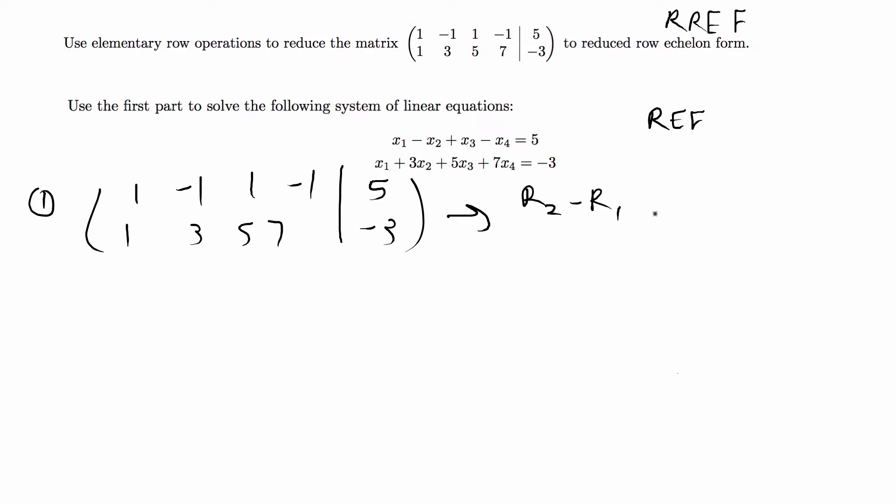That's going to give me 1, -1, 1, -1, 5, so the same thing at the top, and then 0, 4, 4, 8, -8 on the second row.